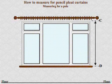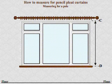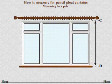To measure for the drop of your curtains, measure the smallest distance between C, which is the bottom of the curtain ring, and D, which could be any one of the following.